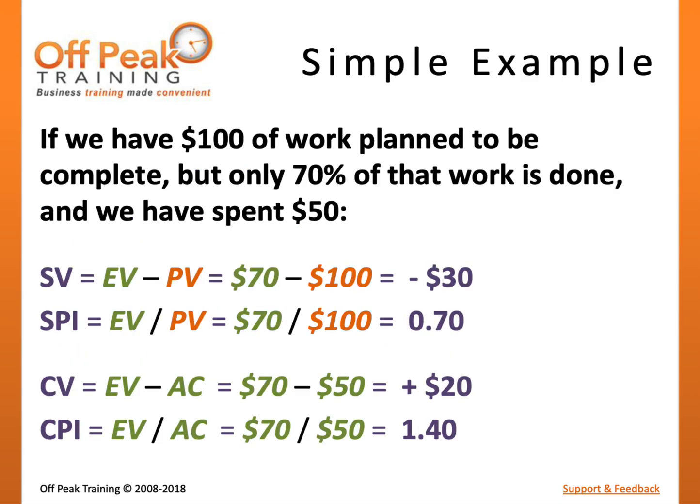For example, if we planned to be done with $100 of work but only accomplished $70 of work, our Schedule Variance will be negative $30 and our Schedule Performance Index will be 0.70, meaning we are behind schedule. If it only cost us $50 to accomplish this work, our Cost Variance will be positive $20 and our Cost Performance Index will be 1.4, meaning we have good cost performance — we are under budget.